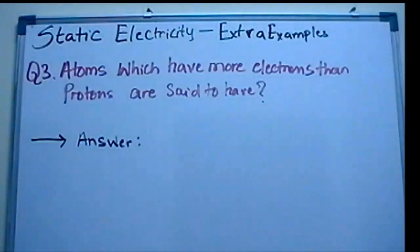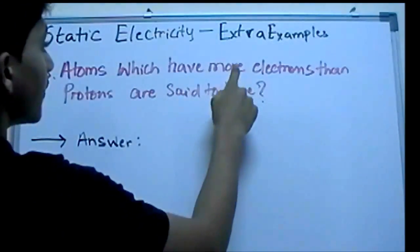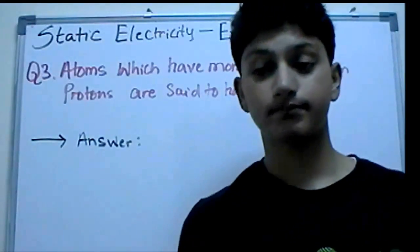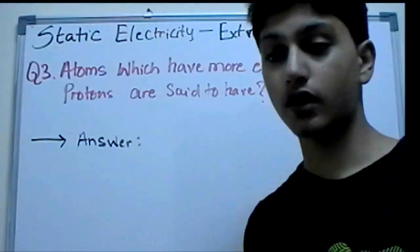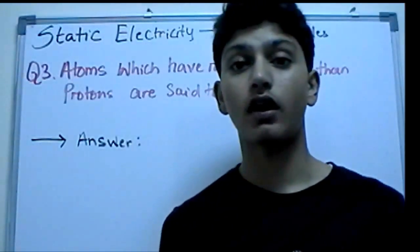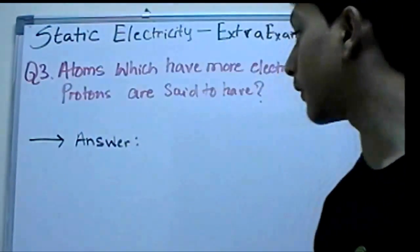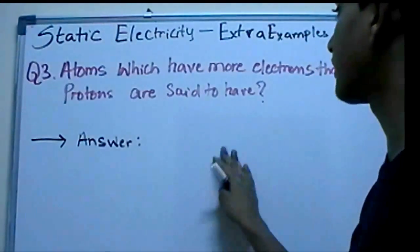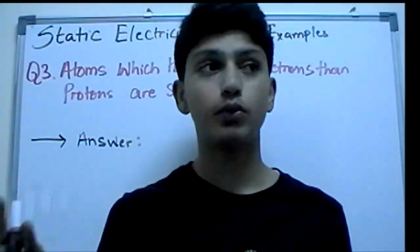Since we know a lot about atoms, the third example is also related to the atom. It says: atoms which have more electrons than protons are said to have what? In our discussion on static electricity, we said that if there are more electrons than protons, that atom is called an ion. The answer would not be ionic charge, because there is no such thing as ionic charge — that's where most people get confused.